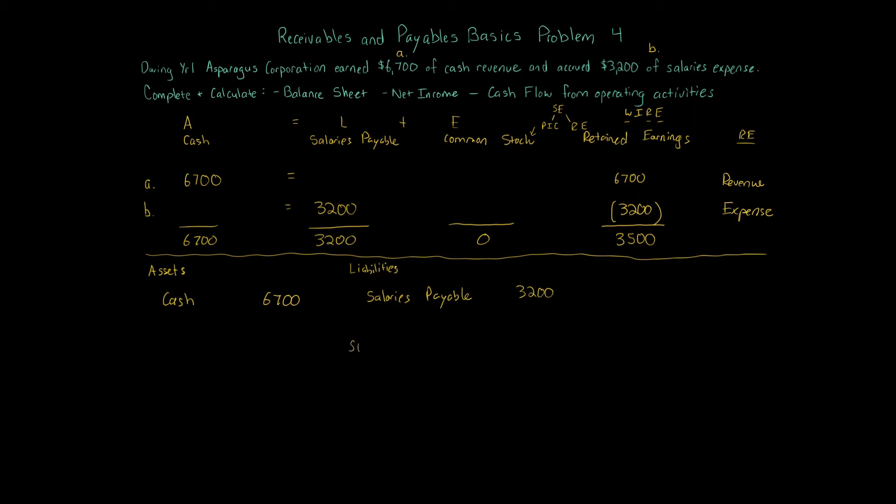And then we have our stockholders' equity. Now, because it's a corporation, again, you have to have at least common stock on the books. Our common stock here, because we don't know the balance, we're going to put zero. Our retained earnings based on the two transactions given, $3,500. So put that on there. We then sum everything up on both sides. So we have total assets of $6,700. We have total liabilities of $3,200. Total stockholders' equity of $3,500. So therefore, the total liabilities and stockholders' equity, $6,700. So left side of the balance sheet equals the right side of the balance sheet. It's in balance. And we're all good.